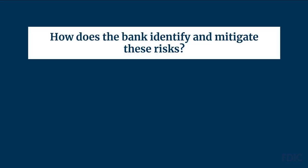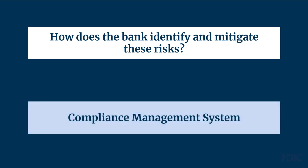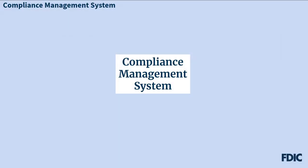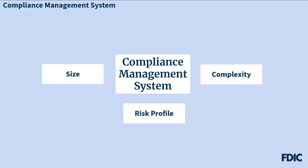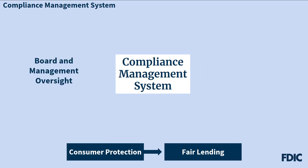Now that we've reviewed the various types of discrimination risks, we will focus on how you, as a director, can help your bank identify and mitigate such risks. The most effective way is to ensure that the bank has a strong compliance management system, or CMS. An effective CMS is commensurate with a bank's size, complexity, and risk profile. A bank CMS provides a risk management framework to support adherence to consumer protection laws and regulations, including those that address fair lending. A CMS is comprised of two elements: oversight by the bank's board of directors and management, and a consumer compliance program.